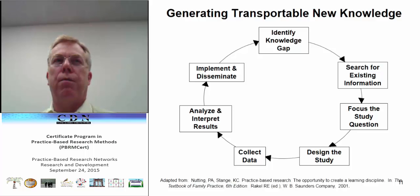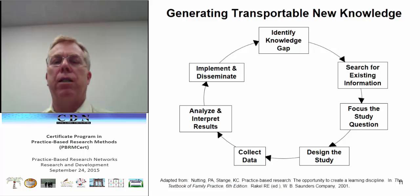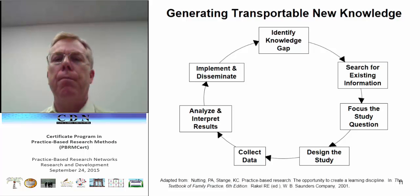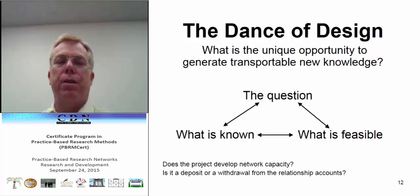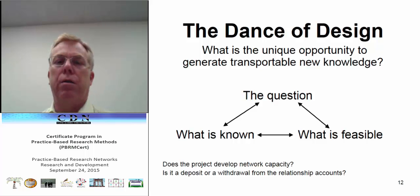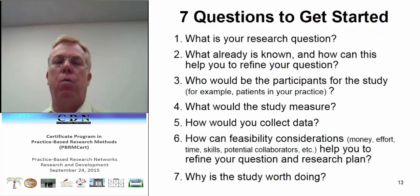Here is one way of thinking about how to do research: start with identifying the knowledge gap, go to the literature to find what's out there, focus a question, design a study, collect the data, analyze and interpret, then implement it. This cycle takes place within practice-based research networks and typically involves participation of the practices, with conversations between practitioners, across practices, and with patients to identify their questions. There's a dance between thinking about what's the question, what's already known, and what's feasible to do in practice.